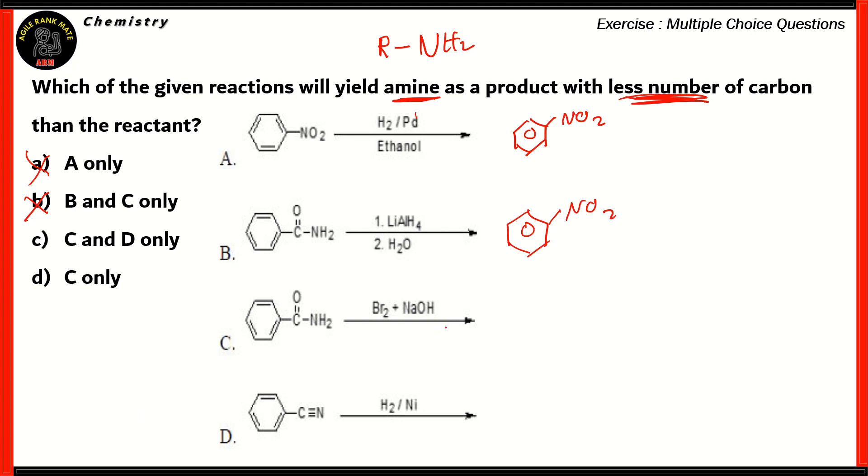Now, if you look at C, it's again benzamide, but the secondary reactant is different. Here we have bromine and sodium hydroxide. So, this would actually form aniline, NH2, along with a benzene ring.